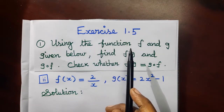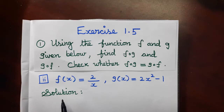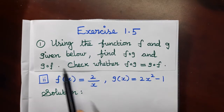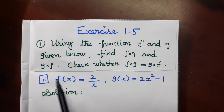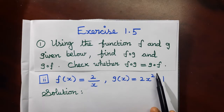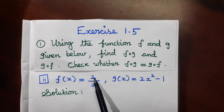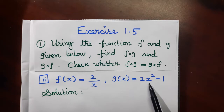Exercise 1.5, First Sum, Second Part. Using the functions f and g given below, find f dot g and g dot f. Check whether f dot g equals g dot f. Second part: f of x equals 2 divided by x, and g of x equals 2x squared minus 1.